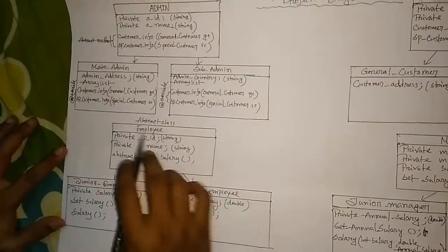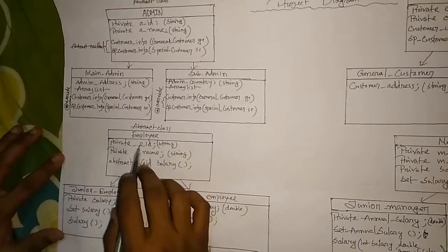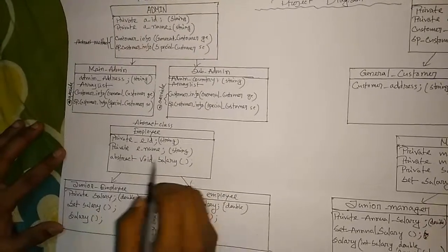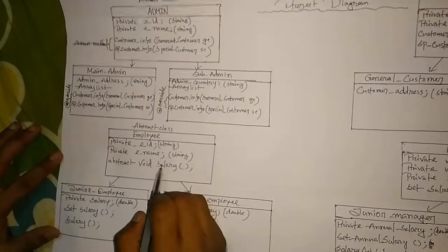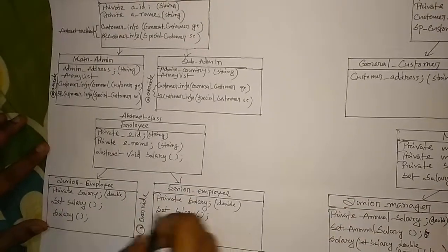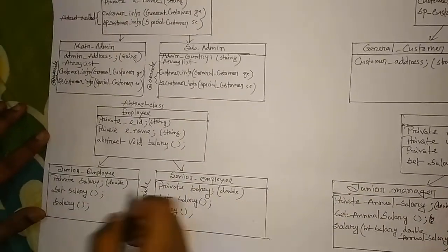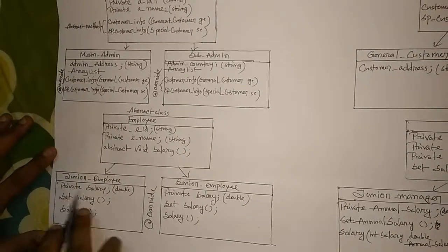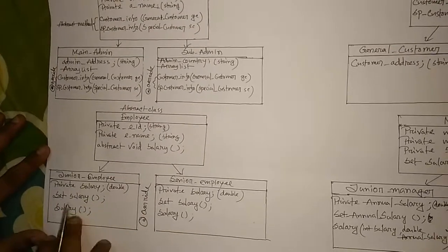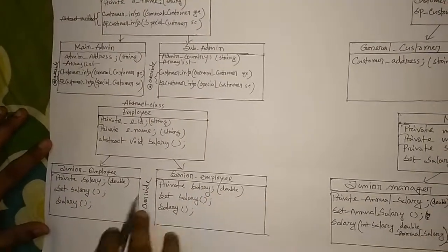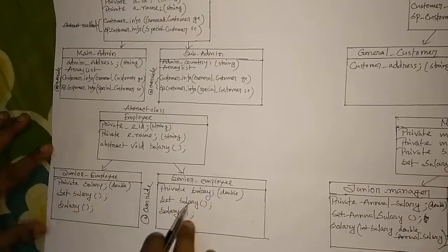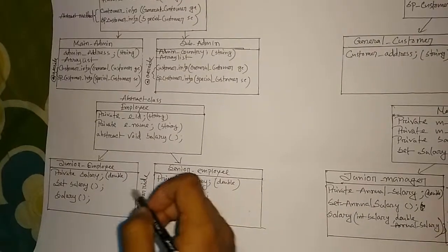Here is my employee class. Here are two variables in private: employee ID and employee name. Here is also an abstract method: void salary. The two child classes are junior employee and senior employee. Junior employee has a new variable — private salary in double. Here is a set salary method and a salary method. Both methods are overridden.